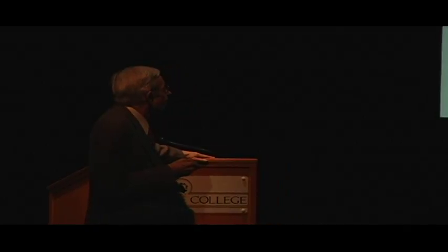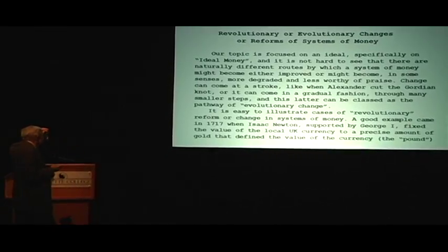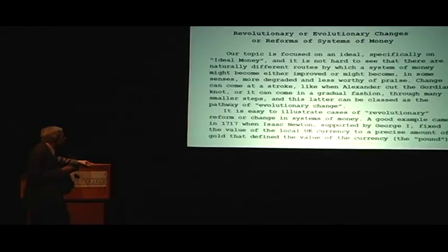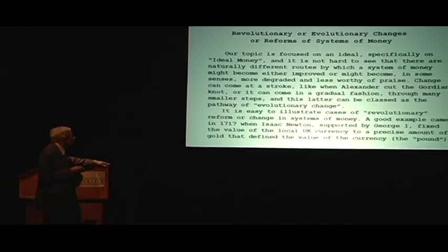Well, revolutionary or evolutionary changes or reforms of systems of money. Our topic is focused on an idea, specifically on ideal money. And it's not hard to see that there are naturally different routes by which a system of money might become either improved or might become in some senses more degraded and less worthy of praise. Change can come at a stroke, like when Alexander cut the Gordian knot, or it can come in a gradual fashion through many smaller steps. And this latter can be classed as the pathway of evolutionary change.